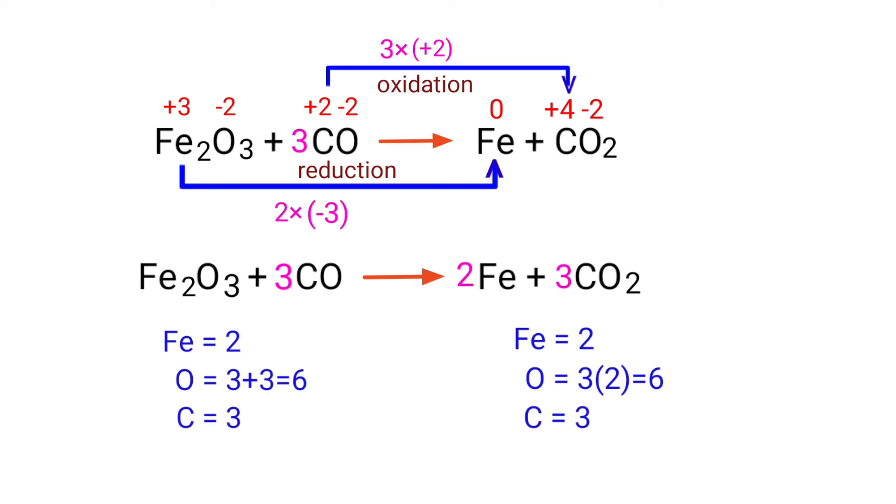The equation is now balanced. There are 2 iron atoms, 6 oxygen atoms, and 3 carbon atoms on both sides.